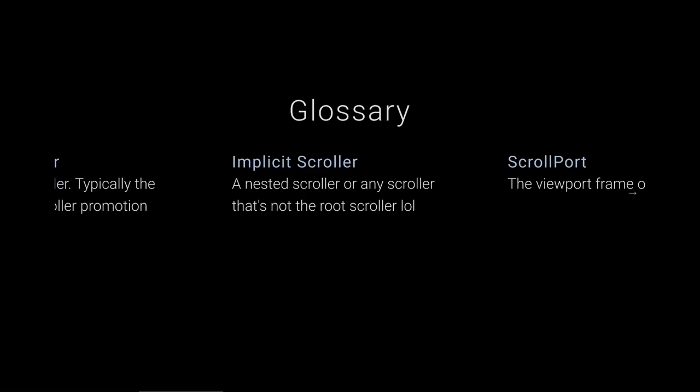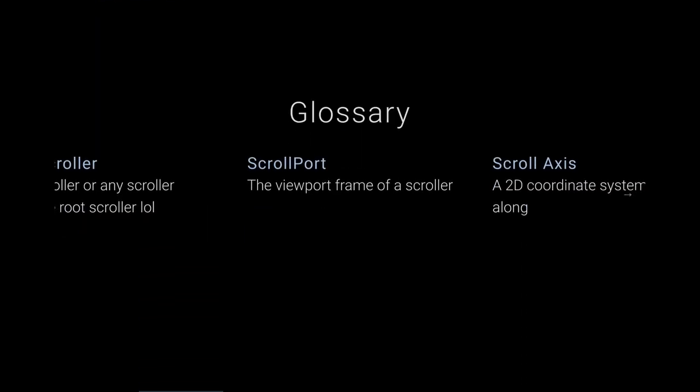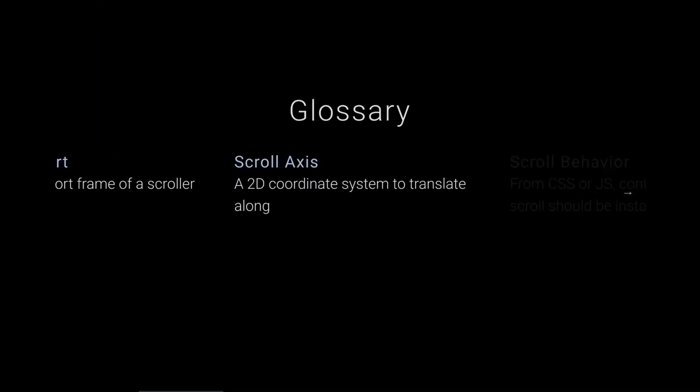All other scrollers are 'implicit scrollers' — any nested scroller that is not the root scroller. Then we have the 'scroll port,' which is the viewport frame of a scroller. In my examples I put a purple outline on scroll ports so you can see the constraint space. Then there's the scroll axis — a 2D coordinate system; scrolling always happens along one of two axes.